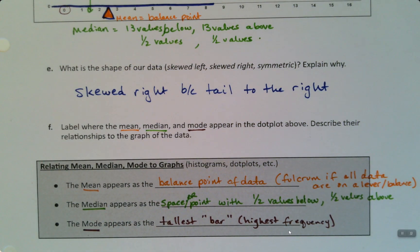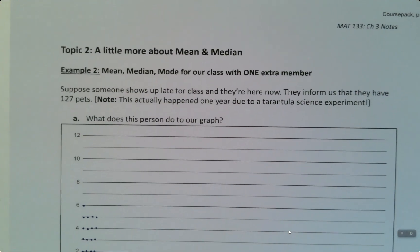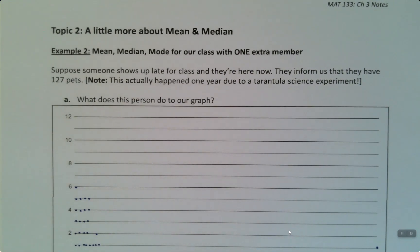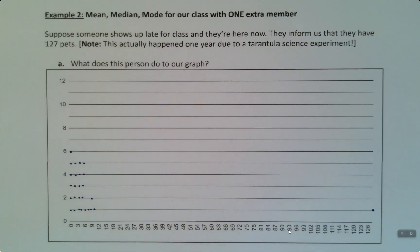So now let's think about this a little bit more and what this shape, or how the shape can be affected by having an outlier. So this is a true story. I actually had a student that had this happen, or I had a class that had this. So I have a student in class, and they inform us that they have 127 pets. Yes, that really happened. Those were real people. It was a thing. It was actually because of a tarantula experiment with their science class. They ended up with a lot of tarantulas left over, and they didn't have the heart to euthanize them. So they ended up with a lot of tarantulas and some cats.